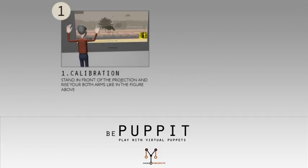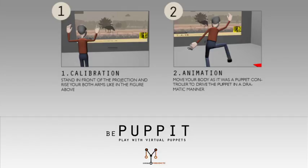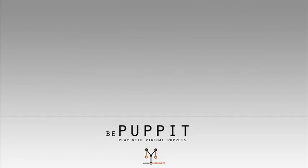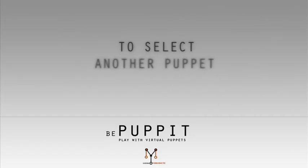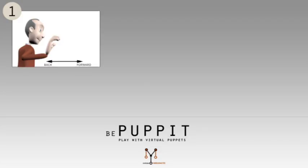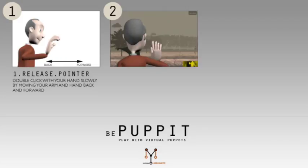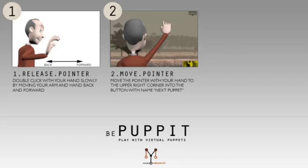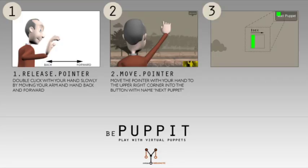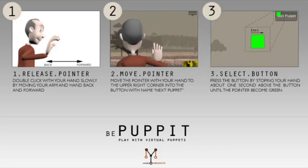To play with a puppet, start by making the calibration pose, then move your body to give life to the puppet. To select another puppet, start by releasing the pointer and making a double-click gesture with your hand, then move the pointer to the desired button. Finally, select the button by waiting a few seconds until the pointer turns into a green square.